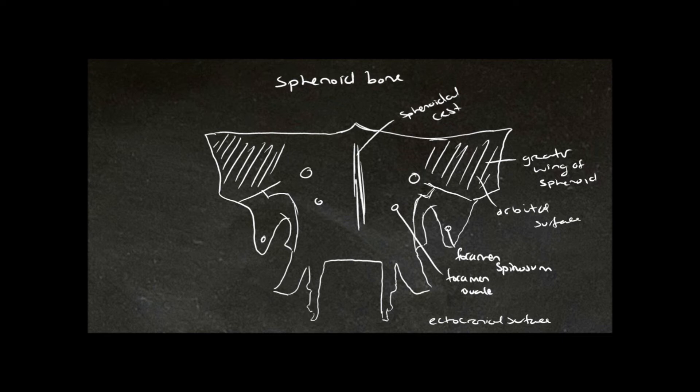There are two projections here called the lateral pterygoid process and the medial pterygoid process.